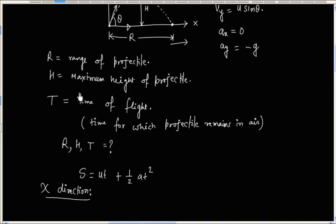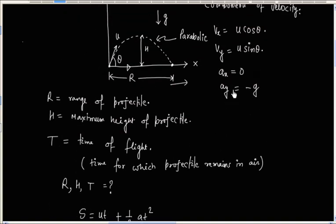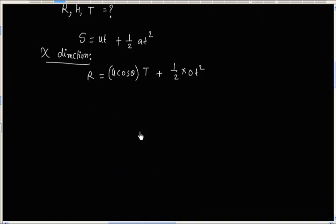Let us apply this in the x direction first. In the x direction, the distance travelled is r, so s is r. The initial velocity in the x direction is u cos theta, the time of flight is t, and there is no acceleration in the x direction. So we have r is equal to u cos theta into t.